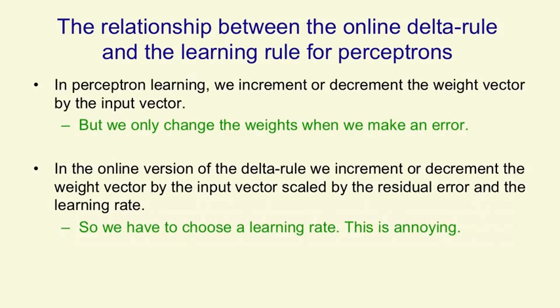In perceptron learning, we increment or decrement the weight vector by the input vector, but we only change the input vector when we make an error. In the online version of the delta rule, we increment or decrement the weight vector by the input vector, but we scale that by both the residual error and the learning rate.